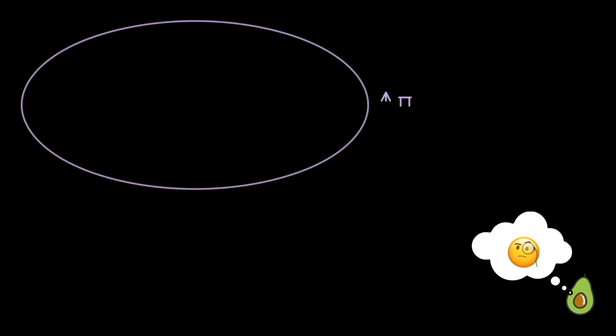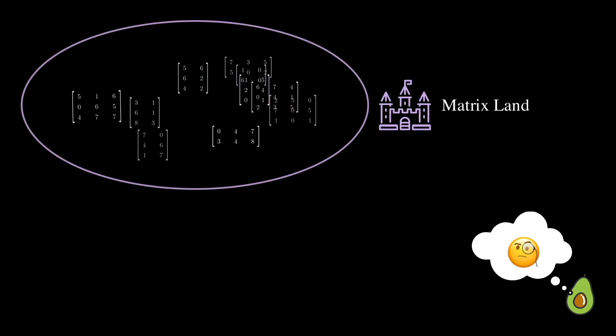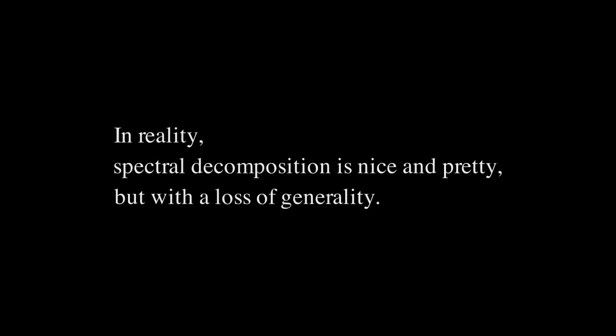The problem is, just how often do you get a symmetric matrix? If you just go into matrix land and grab a matrix at random, firstly, it's probably not square. If it's square, it's probably not symmetric. In reality, the theorem is pretty, with a loss of generality. But would it be possible we can take the similar spirit of decomposition and generalize for all matrices. It doesn't need to be symmetric or square, but any arbitrary matrix of any dimension. And this leads us to chapter 3, the grand finale of linear algebra, singular value decomposition. See you there!